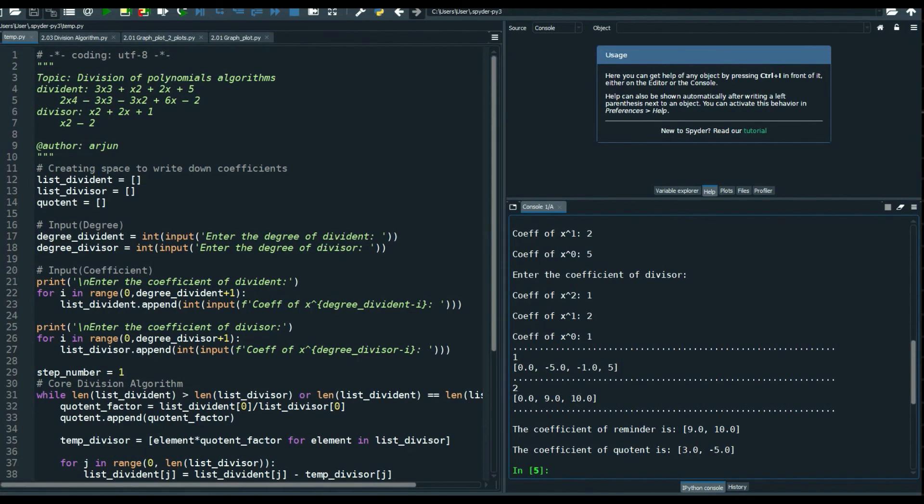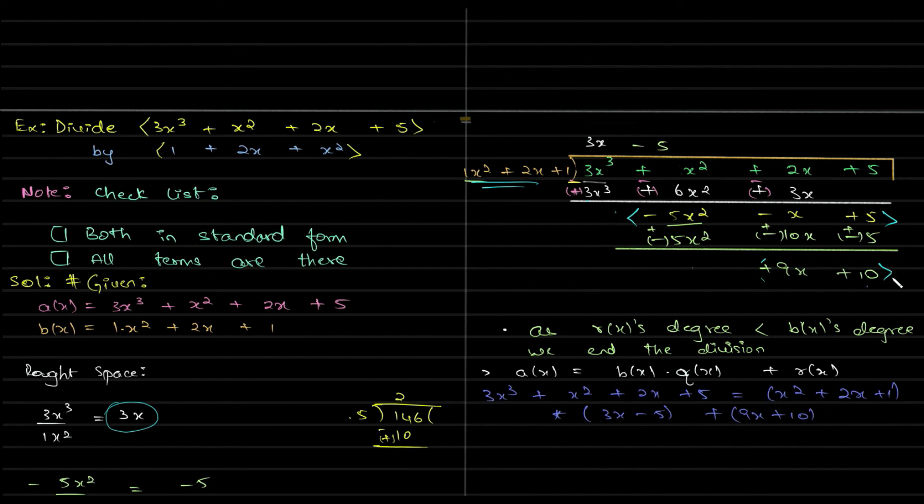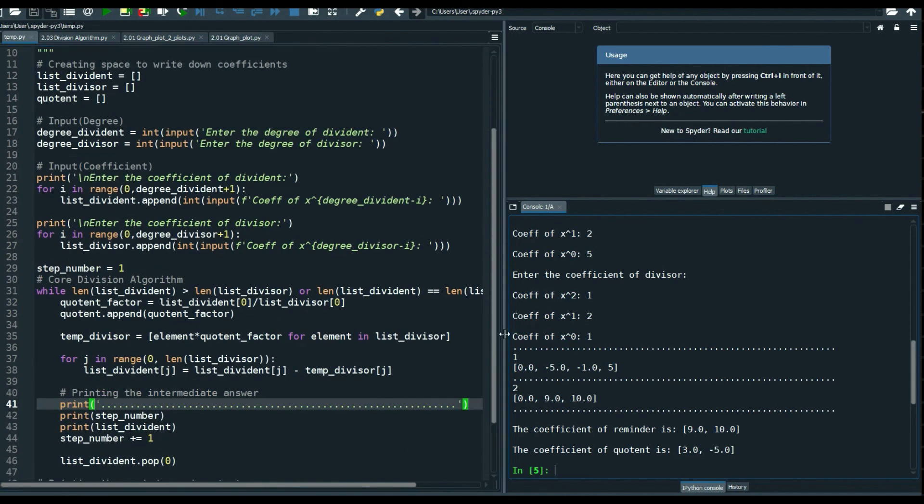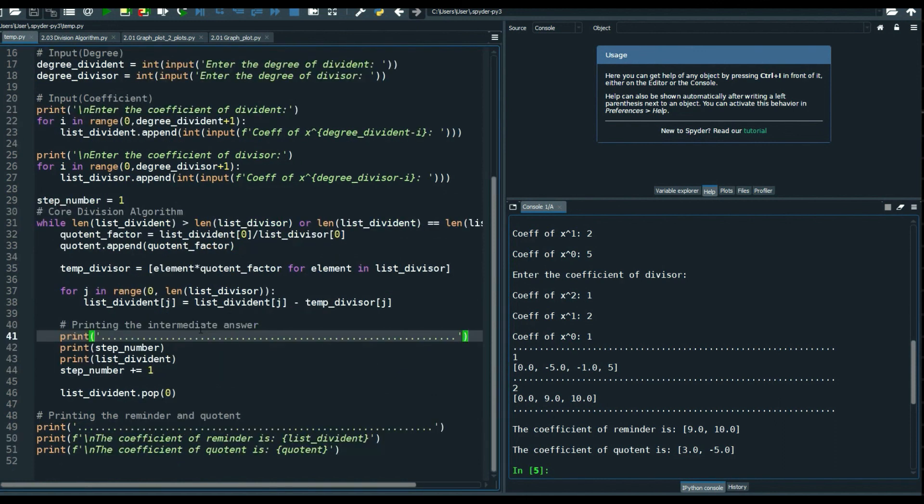In the second step we have 9 and 10. So here too, in the second step we have 9 and 10. Make sense? Quite good. So what we are doing is logical and I hope you guys understood that division process a lot better.